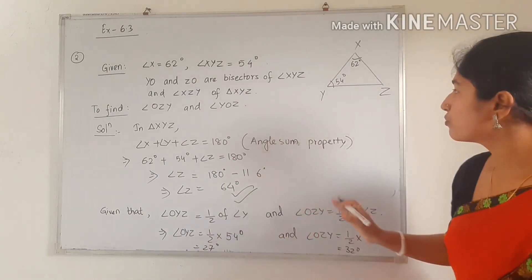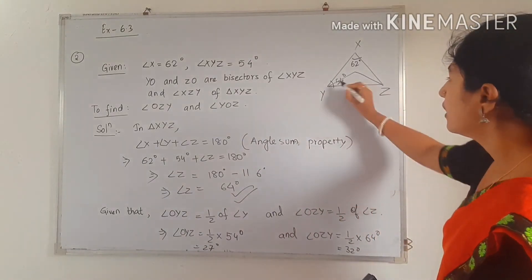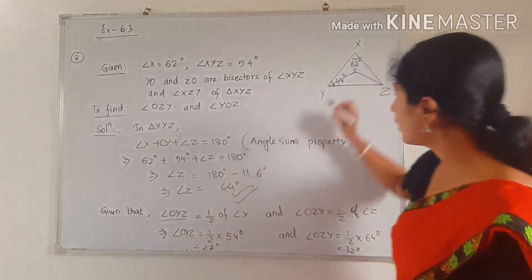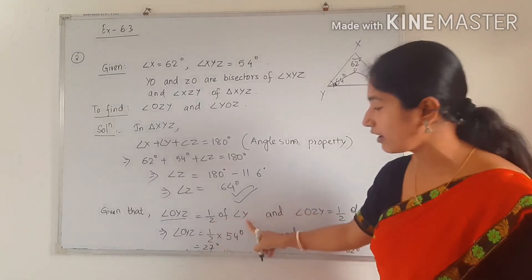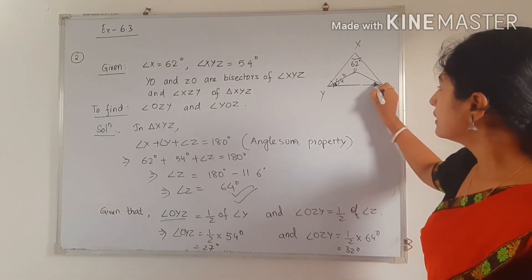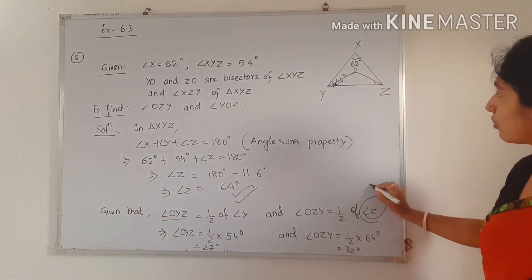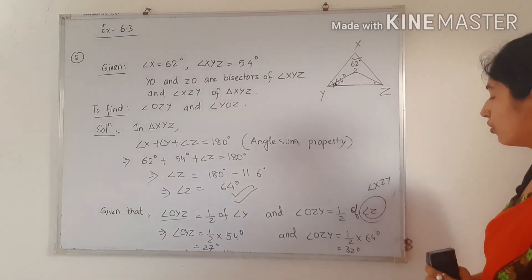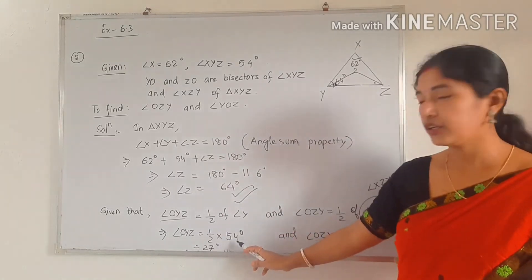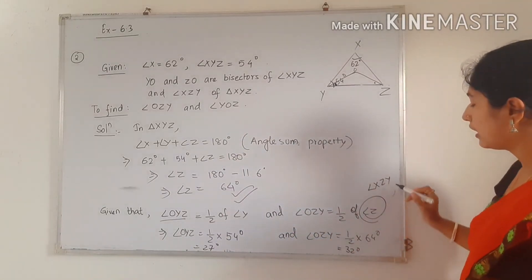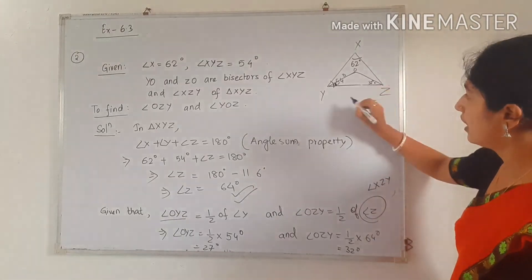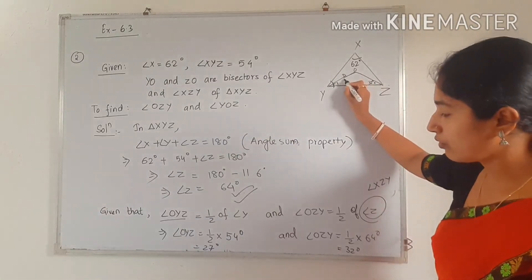Next I have taken the smaller triangle OYZ. Angle OYZ equals half of angle Y, because it is already given that they are bisectors. Angle OZY equals half of angle Z. In place of angle Y we write 54 degrees, so half of 54 is 27 degrees. In place of angle Z we write 64 degrees — already found — so half of 64 is 32 degrees. So this angle is 32 degrees and this small angle is 27 degrees.